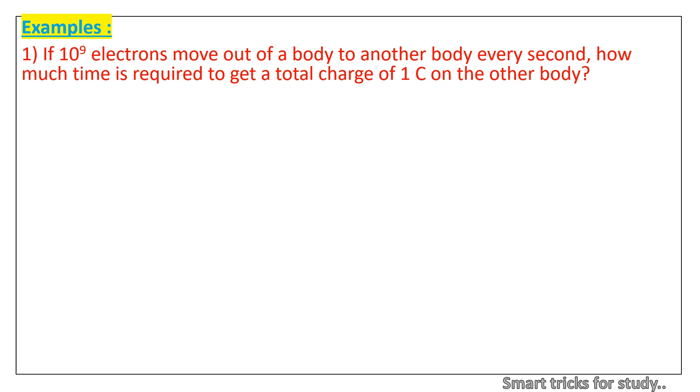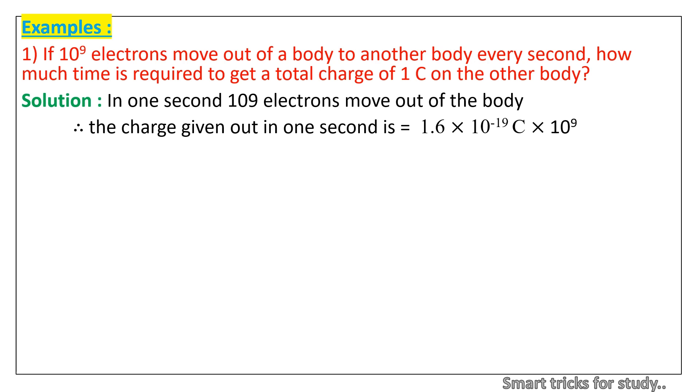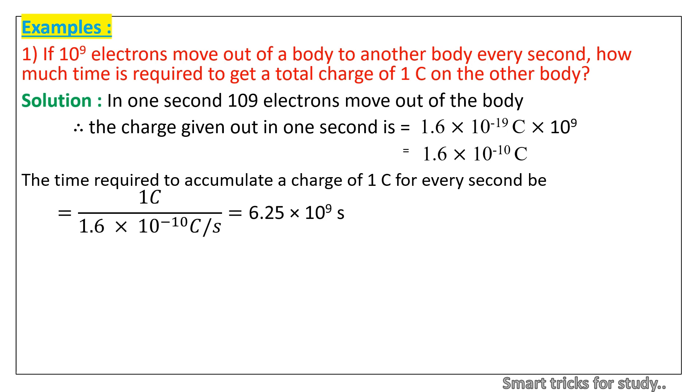Examples: If 10⁹ electrons move out of a body to another body every second, how much time is required to get a total charge of 1C on the other body? Solution: In 1 second, 10⁹ electrons move out of the body. Therefore, the charge given out in 1 second is equal to 1.6 × 10⁻¹⁹ coulomb × 10⁹ = 1.6 × 10⁻¹⁰ coulomb. The time required to accumulate a charge of 1 coulomb, that is t = 1 coulomb divided by 1.6 × 10⁻¹⁰ coulomb per second. On simplification, we get 6.25 × 10⁹ seconds.